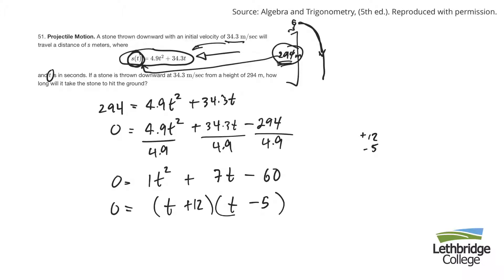So now the zero principle, something times something is 0. So T plus 12 is 0, or T minus 5 is 0. So here T equals minus 12, or T equals positive 5.